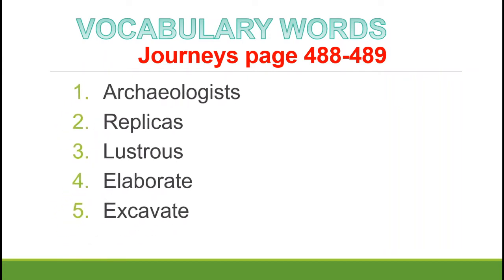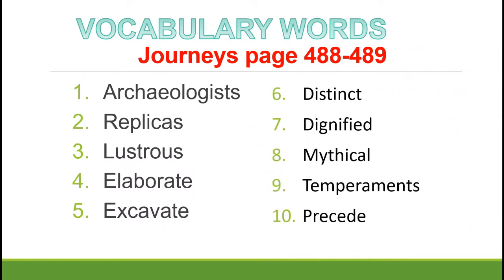These are the vocabulary words. You can find them in Journeys, pages 488 to 489. Open your book now. The ten words are: archaeologist, replicas, lustrous, elaborate, excavate, distinct, dignify, mythical, temperaments, and proceed.